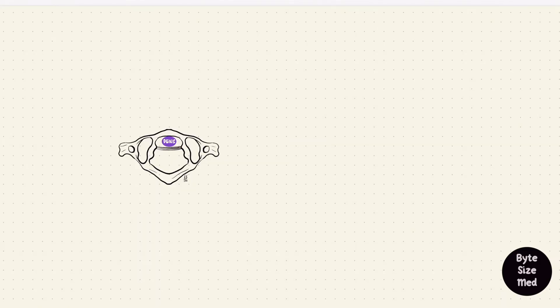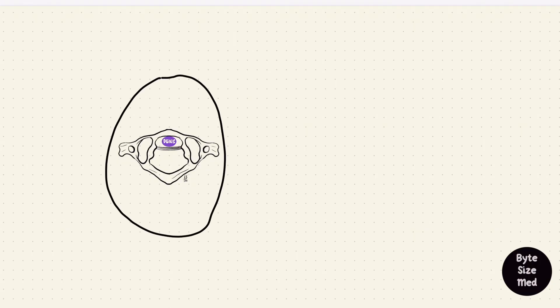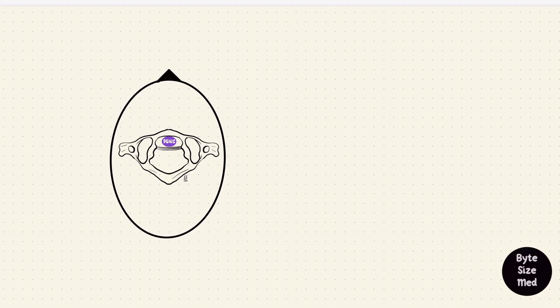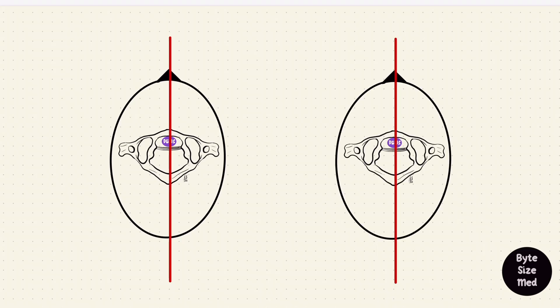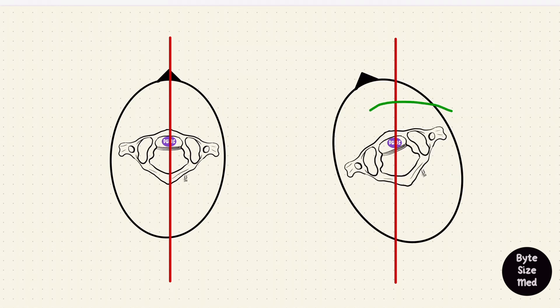Let's place atlas and axis beneath the cranium. We're looking at the top of the head from above. This is anterior — we'll draw in a little nose. This is the midline, an axis that goes through axis the bone. When the head rotates to one side, atlas carries the cranium and pivots on axis. The head turns, but axis stays where it is — they pivot around axis. Axis is literally the axis for the two to pivot on, and that's how we say no.